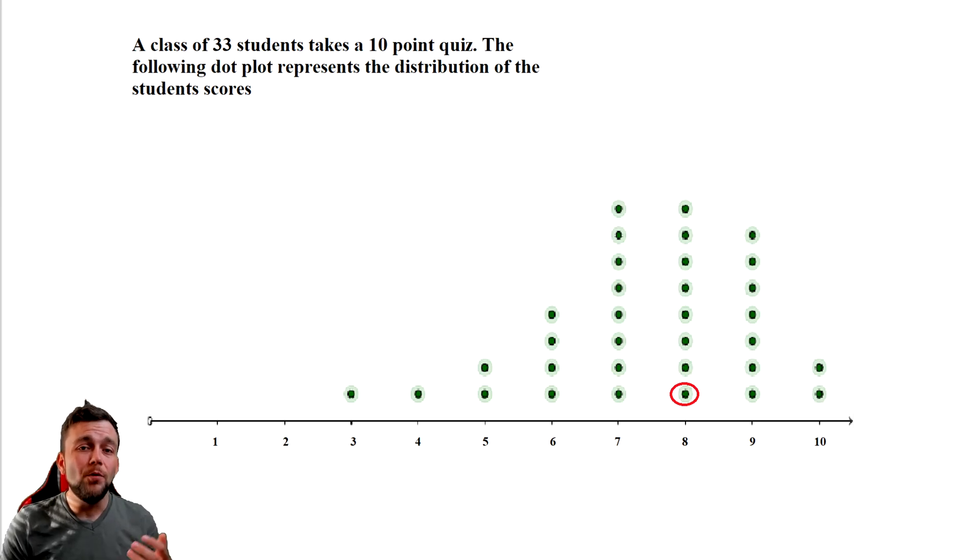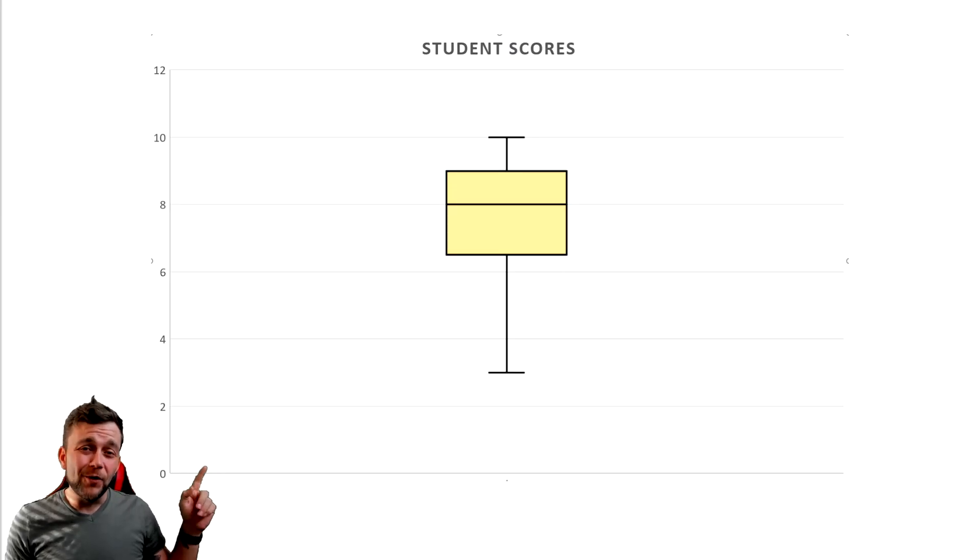Here we have our first example of a box plot. Always remember to read the titles of any charts that you're given when you're taking the GED. Our box plot is titled Student Scores. We're referencing the data in the dot plot we just covered. That means that we're using the same data in the dot plot for this box plot. Let me go through and label each part of this box plot so we have a better understanding of what's happening.